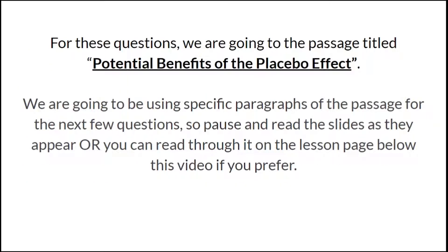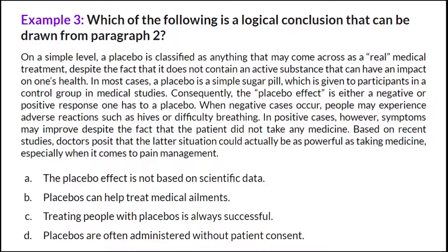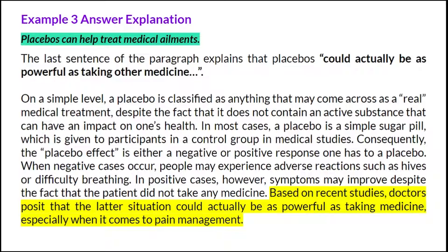Now let's dive into examples that align with the passage called 'Potential Benefits of the Placebo Effect.' We will zoom in on specific paragraphs — you can follow on your screen or pull them up on the lesson page below this video. Here we're zooming in on paragraph two — go ahead and pause, read, and determine which is the most logical conclusion. B is the best answer: 'Placebos can help treat medical ailments.' The last sentence of the paragraph explains that placebos could actually be as effective as taking other medicine. I've highlighted that in yellow from the paragraph.